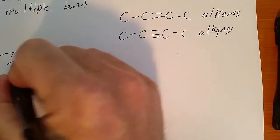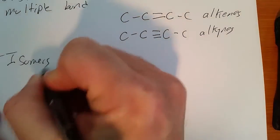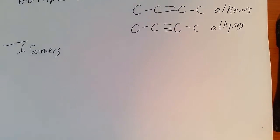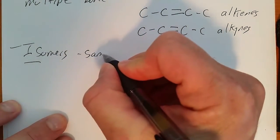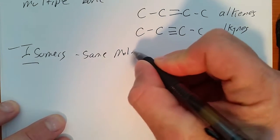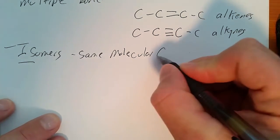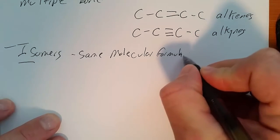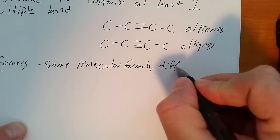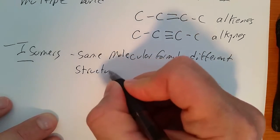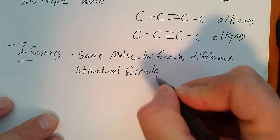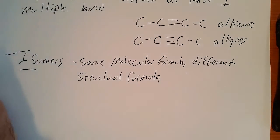We need to remember isomers. Isotope, as you remember, hopefully, meant the same number of protons, different number of neutrons. Isomer means same molecular formula, different structural formula. And we did a lot of those in class.